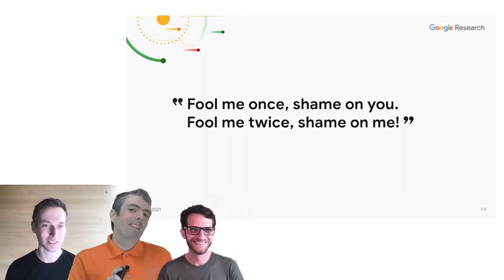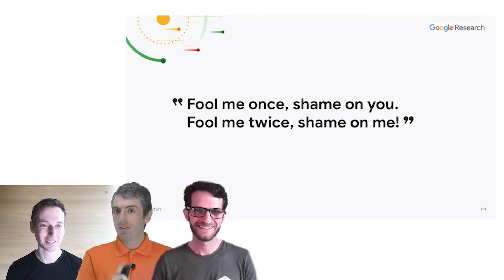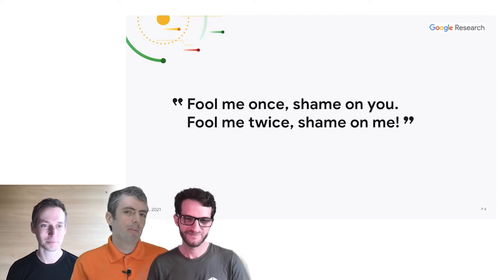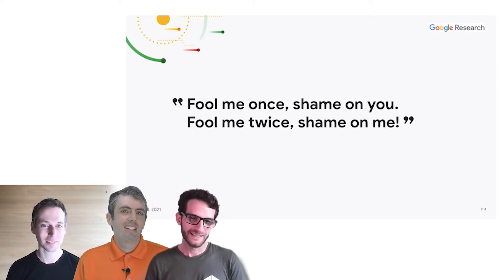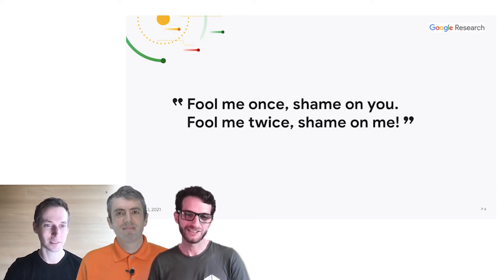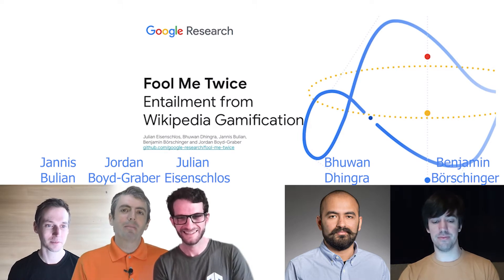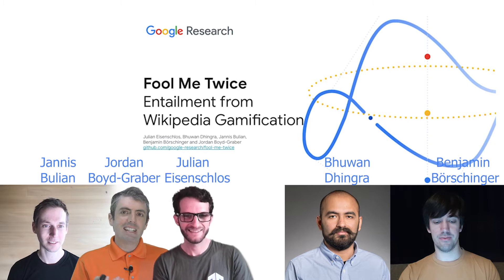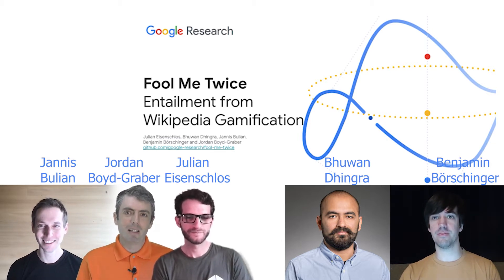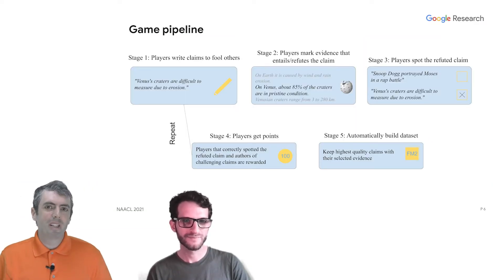What if I worded my claim a little differently? What if I said 'most humans only use a small fraction of their mental capacity'? Would you be fooled by that? There's an old Russian saying: fool me once, shame on you; fool me twice, shame on me. In this video, we're going to explain how to create entailment datasets via an interactive game that creates harder examples than current entailment data. Let's take a tour of our game, which we call Fool Me Twice.